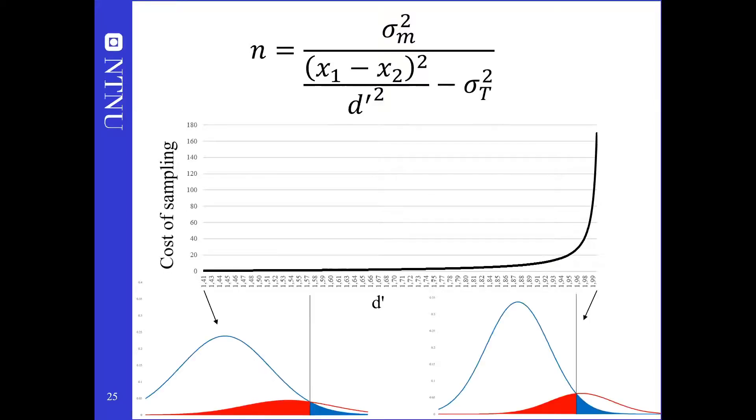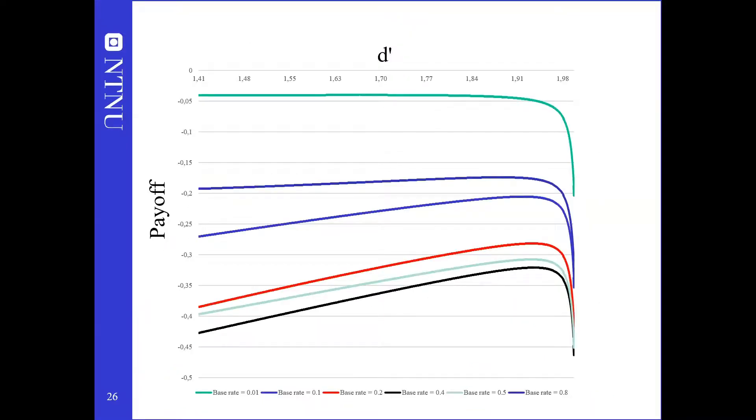As d' approaches the maximum given the true variance, the extra number of samples needed for each incremented d' approaches infinity, and so does the cost. As sampling increases d', the total cost of errors shown here by the shaded area decreases because there are fewer of them, and the benefit of correct decisions increases because there are more of them. That must be balanced against the increasing cost of sampling. What is the optimum extent of sampling?